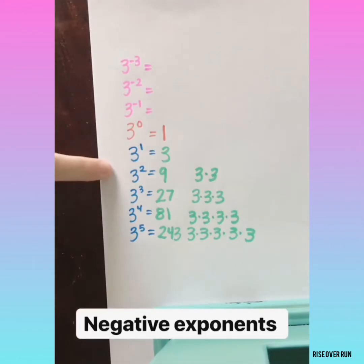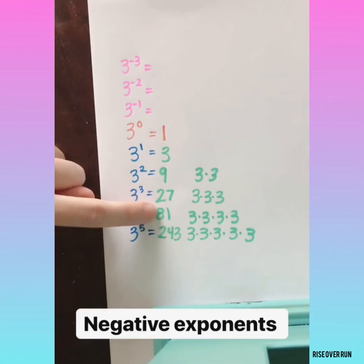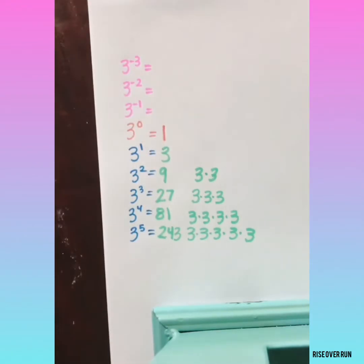Let's continue this pattern even further with negative exponents. Again, if this pattern continues, then this pattern must continue. So here we're dividing by 3 every time. So to continue moving up the pattern, we still need to divide by 3.